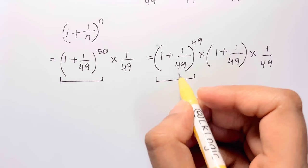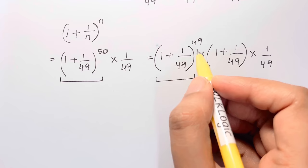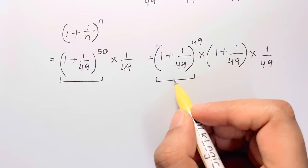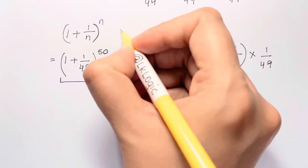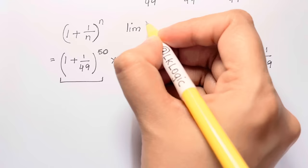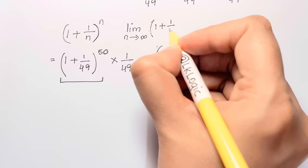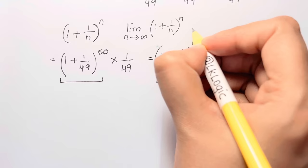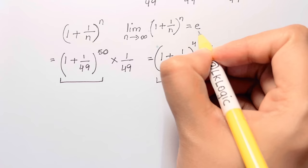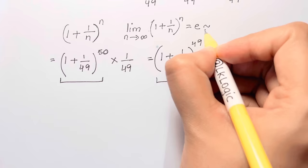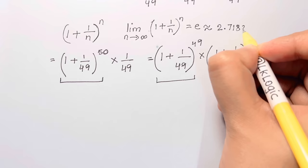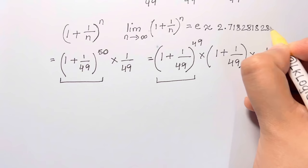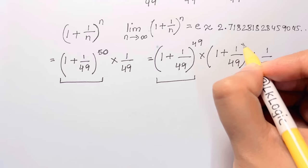You may have heard of Euler's number e. The definition of Euler's number is: the limit as n tends to infinity of (1 plus 1 over n) to the power of n equals e. This number e is approximately equal to 2.718281828459 and so on — it is an irrational number.